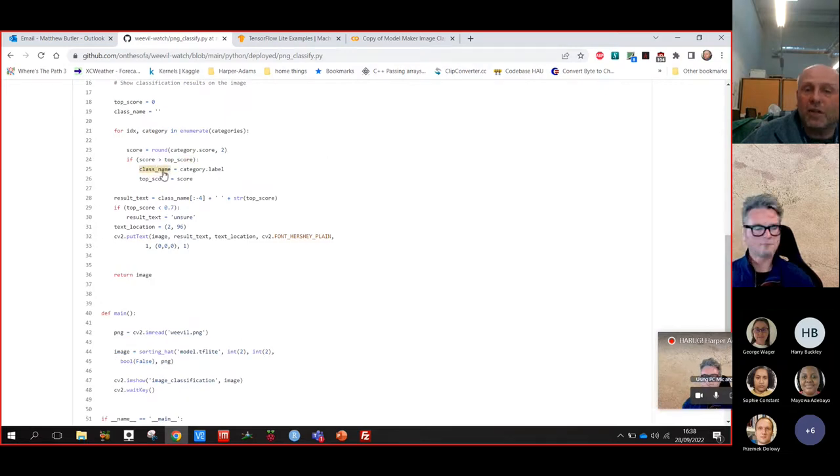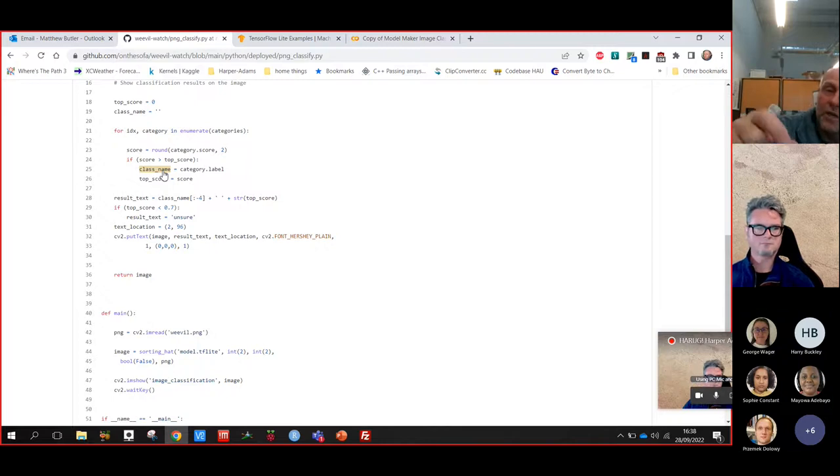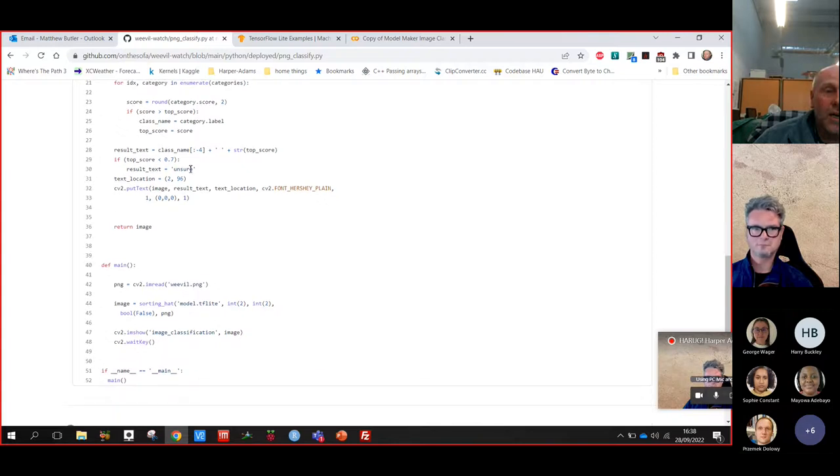And what I've done is I've looked. So it'll give a class name. It gives you a sort of an array back in this case, just an array of two with scores. So it'll say something like weevil 70%, earwig 30%. And I'm only interested in the highest score. And I've said that if that high score is greater than 70%, just go with what it is. If it's less than 70%, unsure. So you'll see later on in some of the detections, it does, it is unsure. And that's what it means. It means it was less than 70% sure.